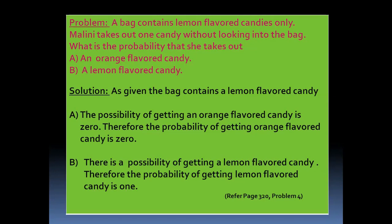Let us go through a few examples. If a bag contains lemon flavored candies only, and Malini takes out one candy without looking into the bag, what is the probability that she takes out: first, an orange flavored candy; second, a lemon flavored candy? Since the bag contains only lemon flavored candy, getting an orange flavored candy is not possible, so the probability is 0. This is an impossible event. For the lemon flavored candy, the probability is 1 — this is a sure event.